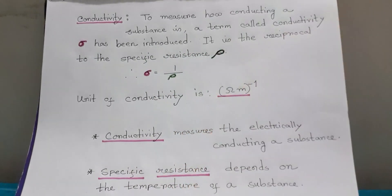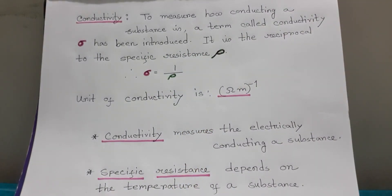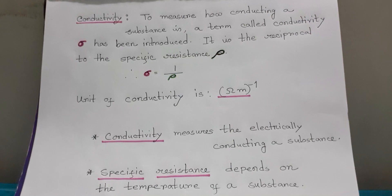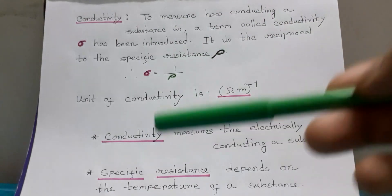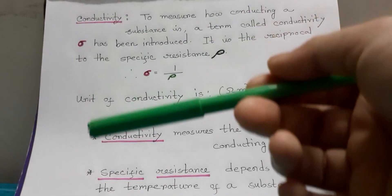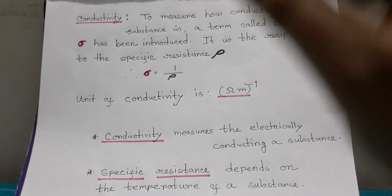Conductivity is the reciprocal of specific resistance. A matter can be more conducting or less conducting. To measure how much the matter can pass electricity — that means how easily electrons can flow — that is the conductivity. To measure conductivity, per ohm meter is used.